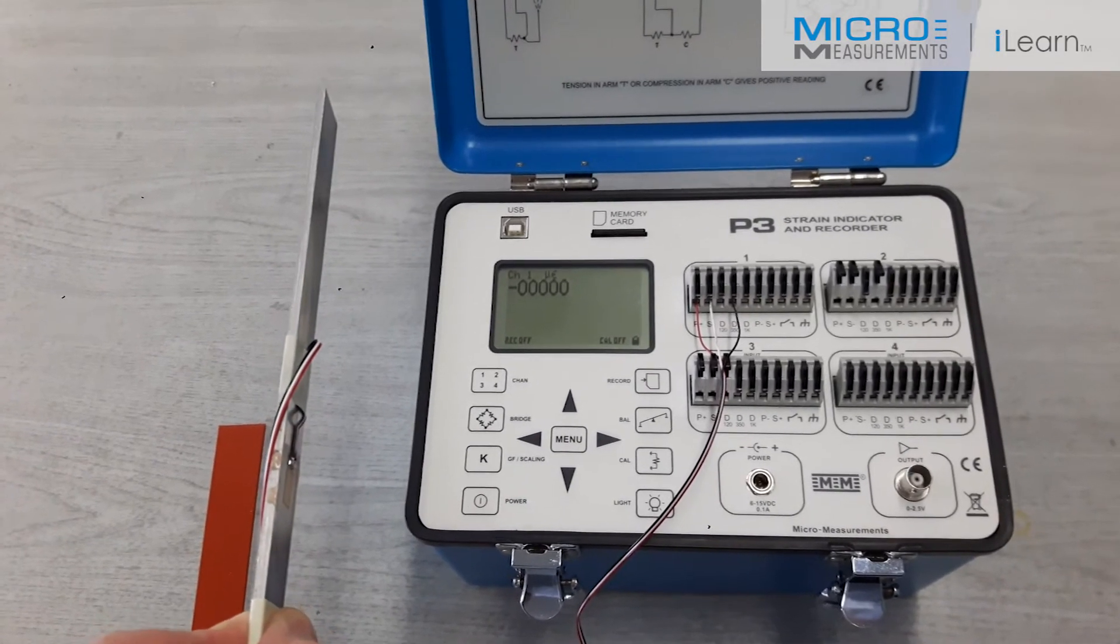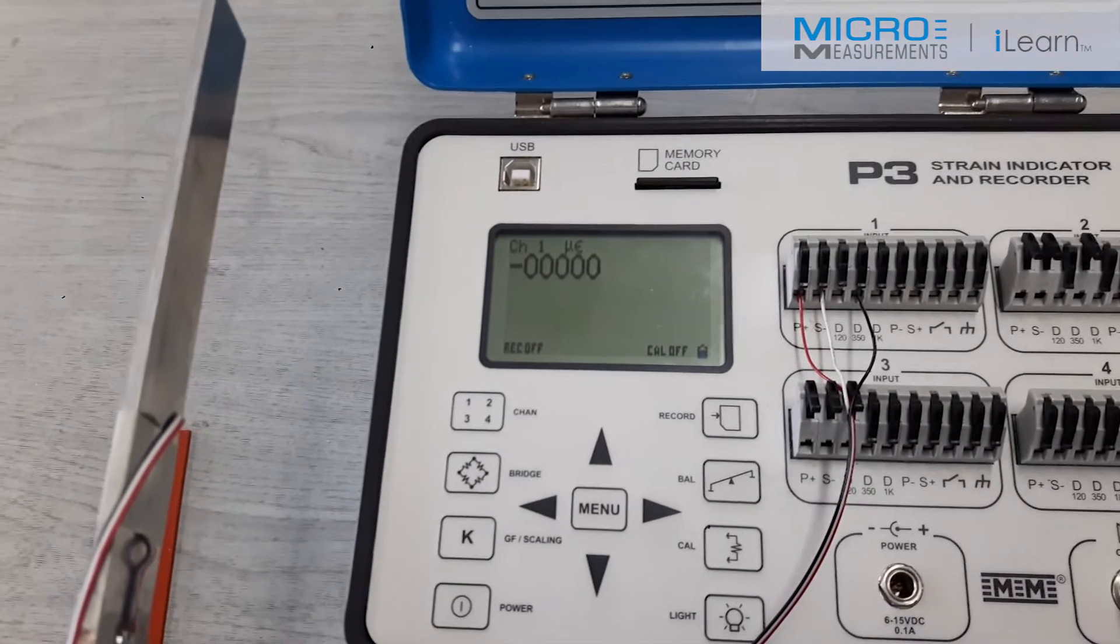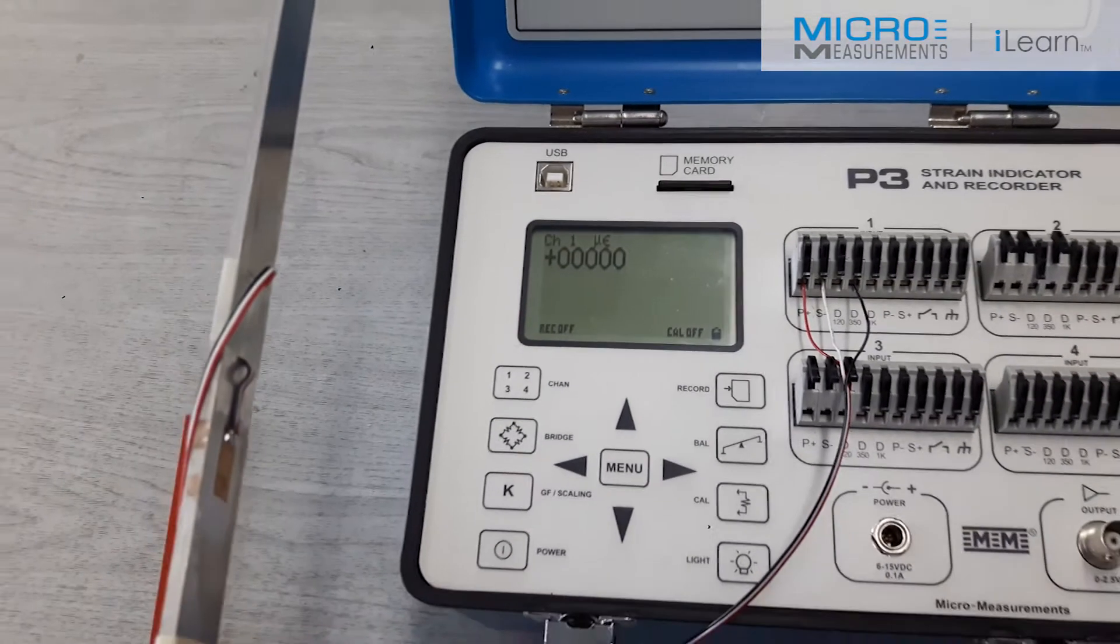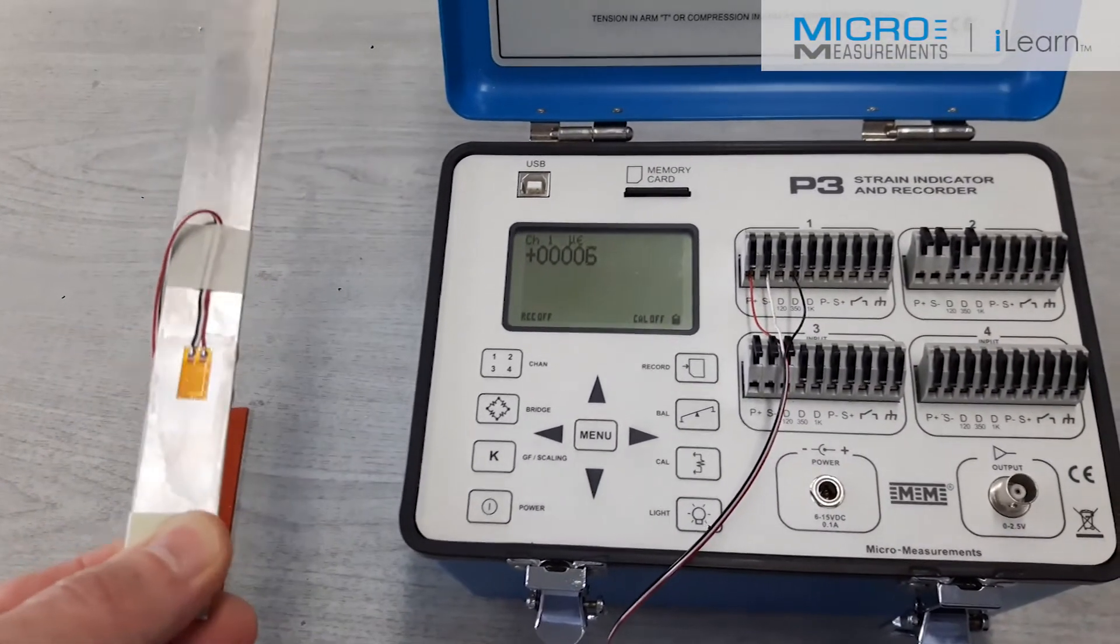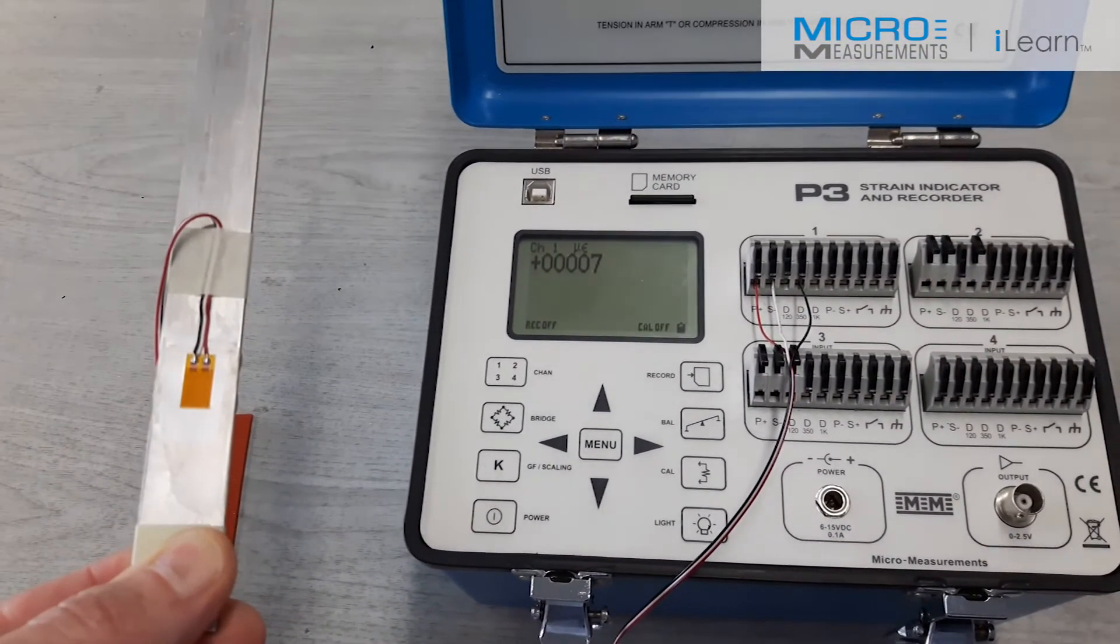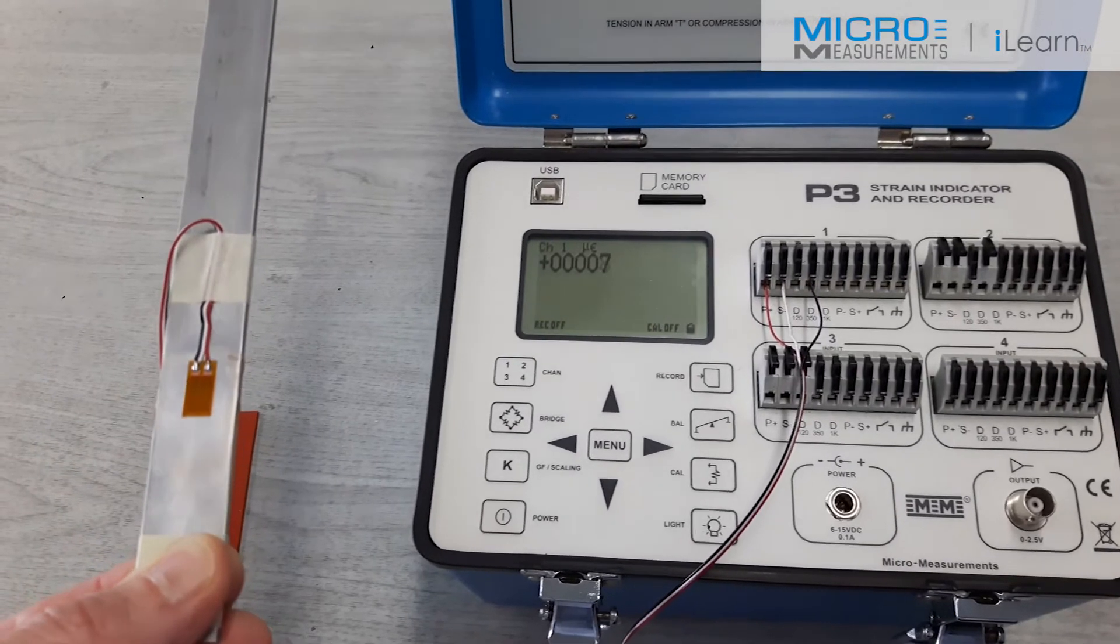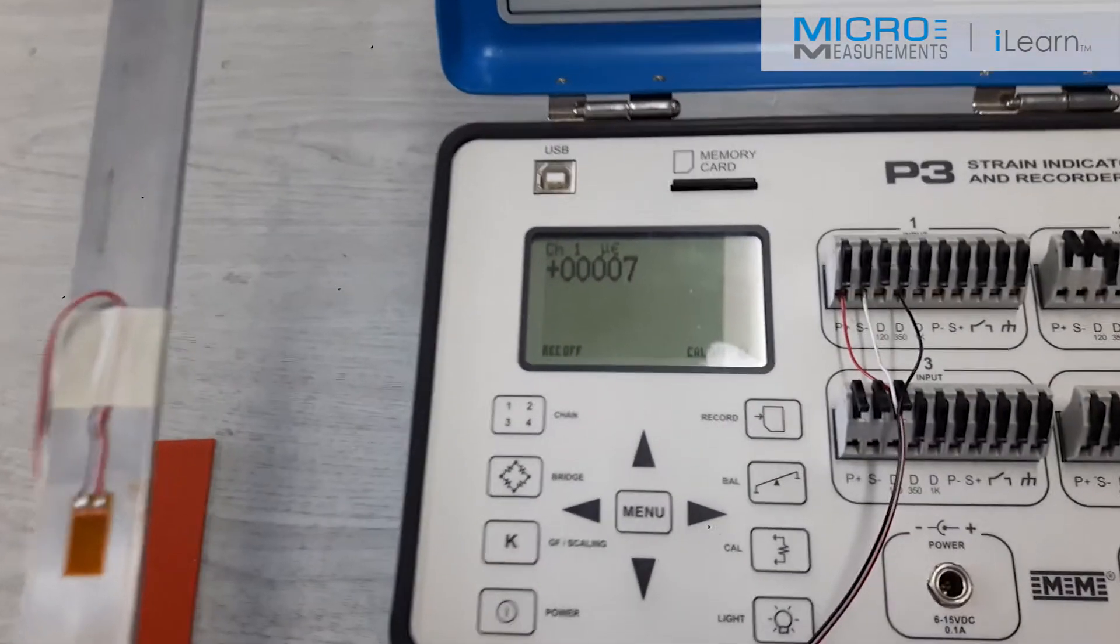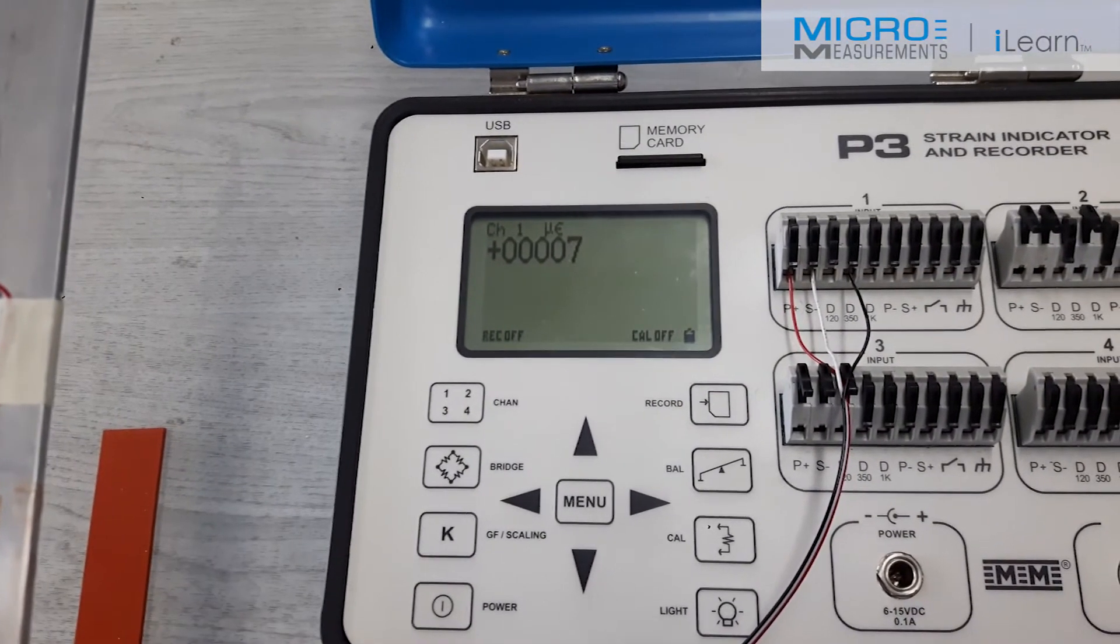So you can see here that I have previously balanced the beam at zero microstrain. When I carefully turn the beam over, and notice that I've strapped the lead wire to make sure I've not got an effect of the weight of the lead wire, you can see that I'm reading seven to eight microstrain.